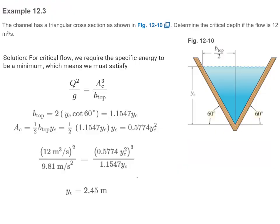The last example involves a non-rectangular cross-section. We want to determine the critical depth if the flow is 12 cubic meters per second. Using the equation Q²/g equals Ac³ divided by B-top, we find the top width B-top using trigonometry, and the cross-sectional area as one-half base times height for the triangular section. Plugging into the equation, we can solve for the critical depth Yc.